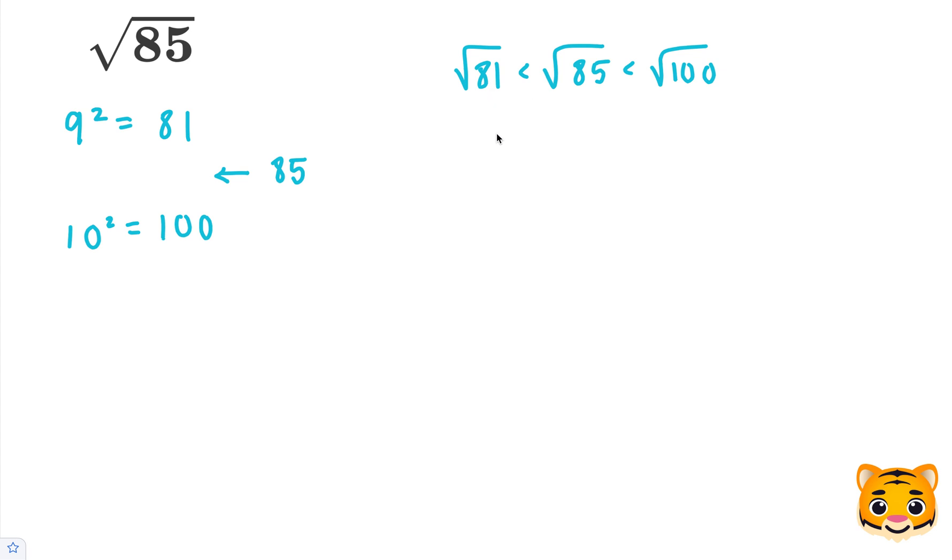Now we can rewrite the square root of 81 as 9, because 9 squared is 81. And then we can rewrite the square root of 100 as 10, because 10 squared is 100. Now we can see that the square root of 85 lies between 9 and 10.